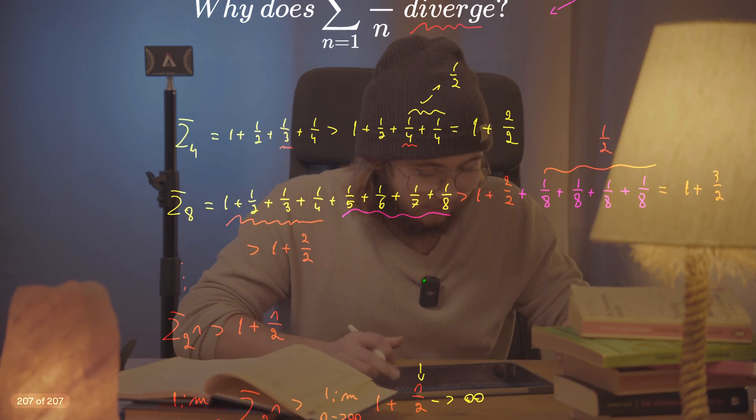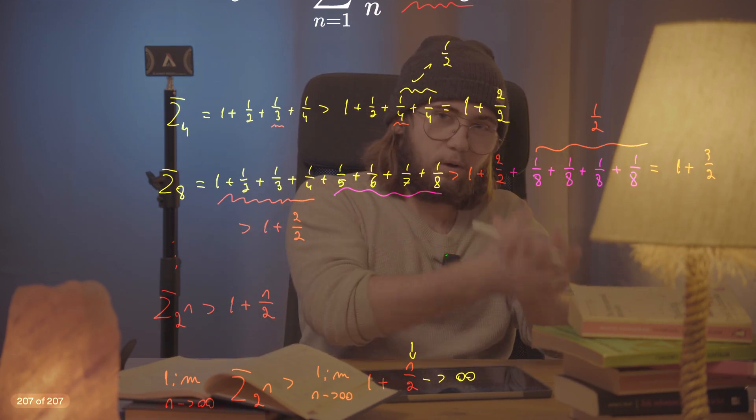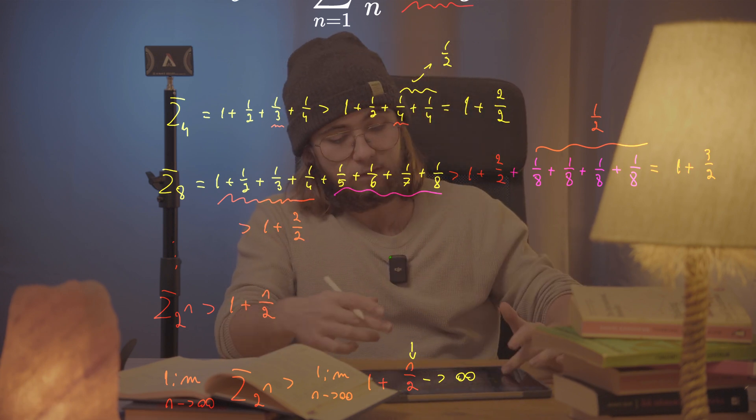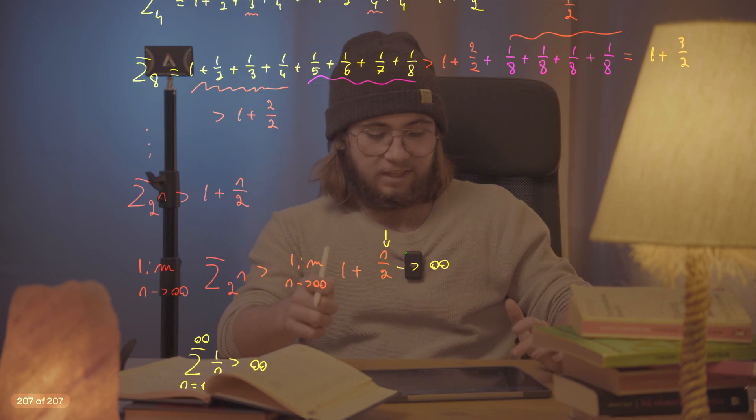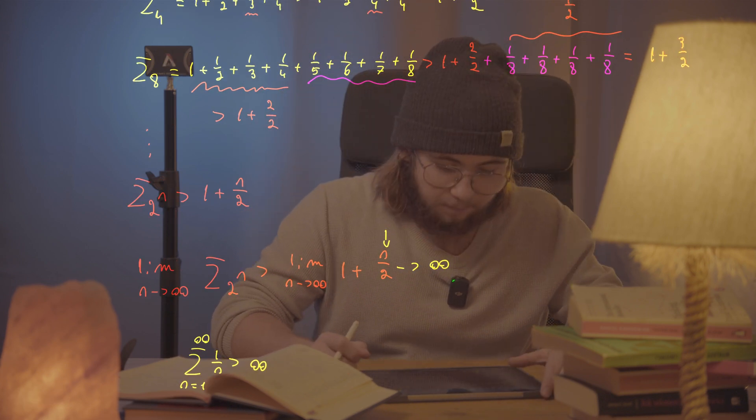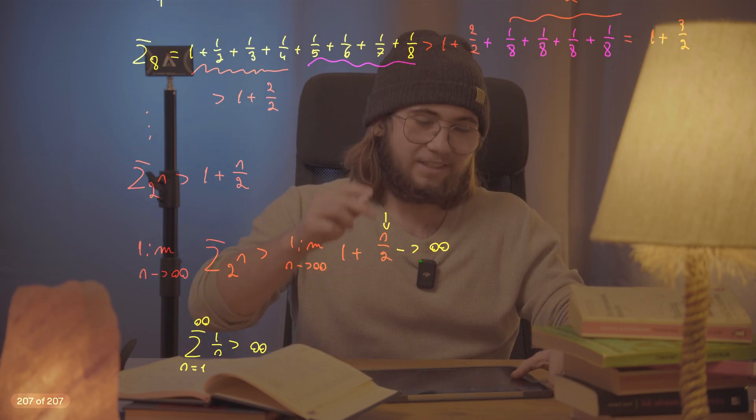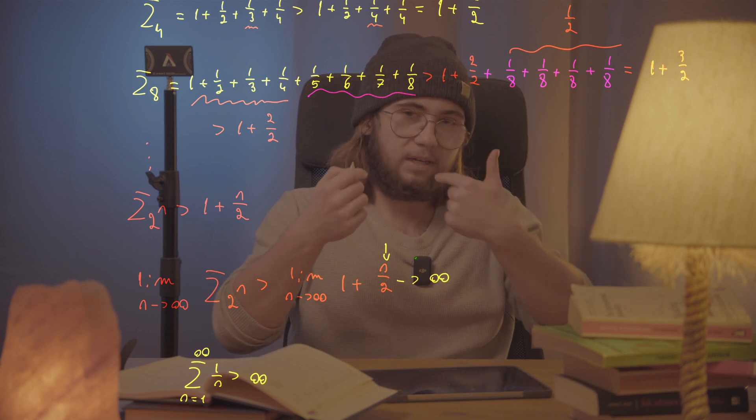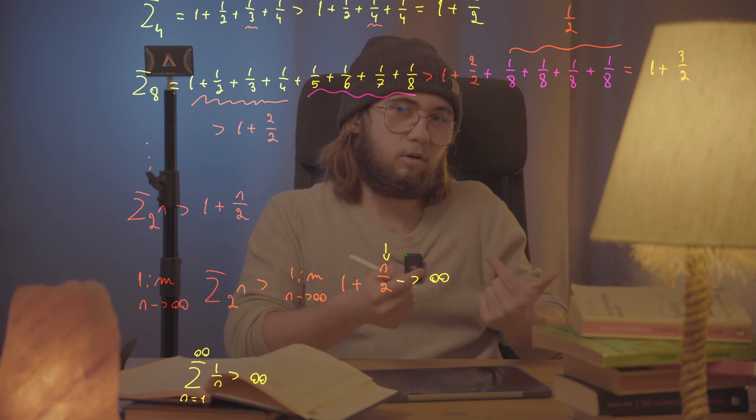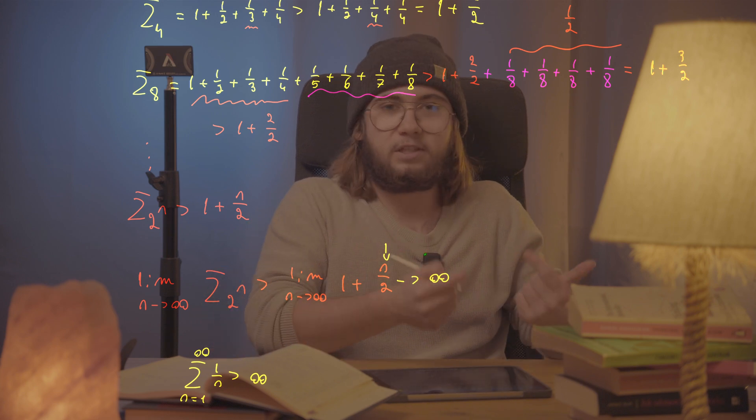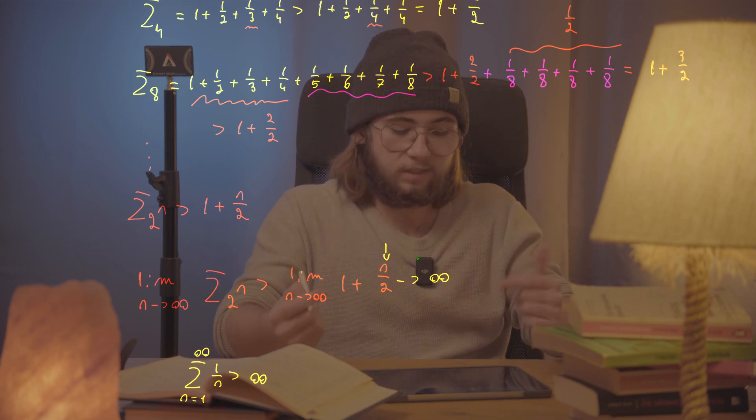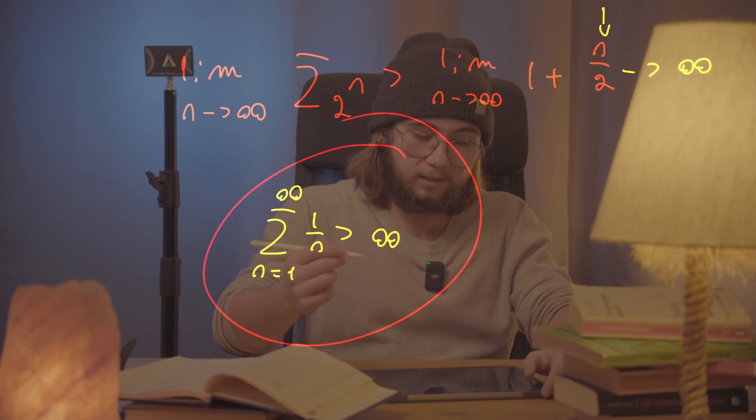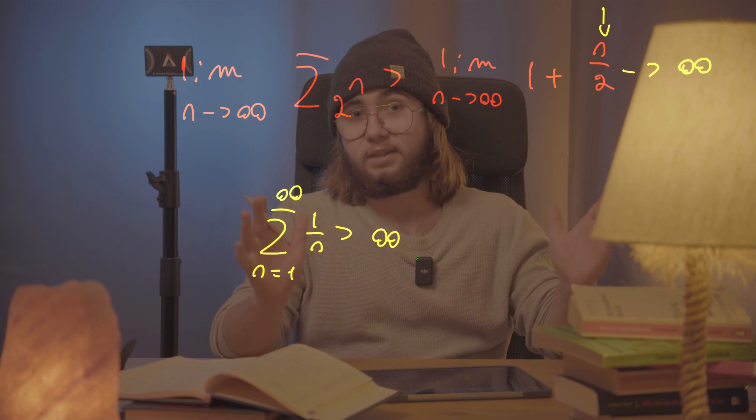So again, what did we do here in order to prove it? We took the partial sums of some of the first few terms of this sequence, and we actually kind of noticed and stated without proving - but well, the proof is just pretty straightforward - that the partial sum of the first 2 to the power of n terms is going to be greater than 1 plus n over 2. And then we just took the limit of both sides of this inequality as n goes to infinity, and we found that what we're looking for is greater than infinity, and so it diverges.